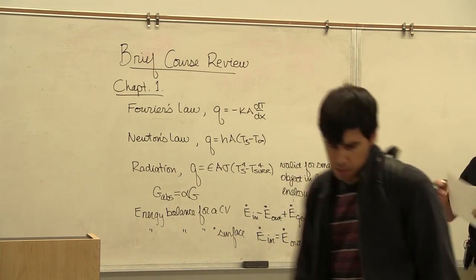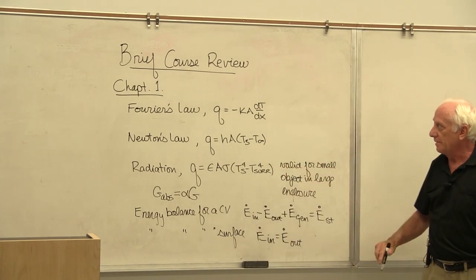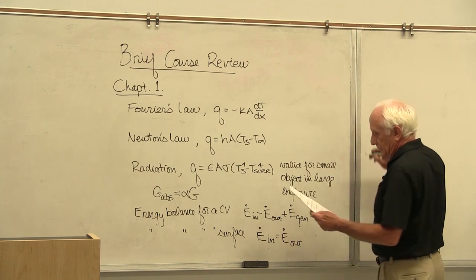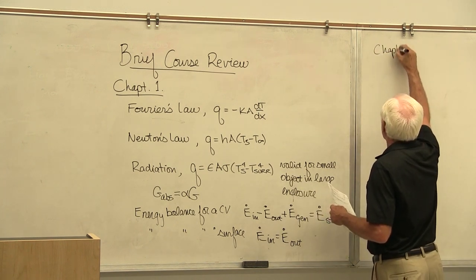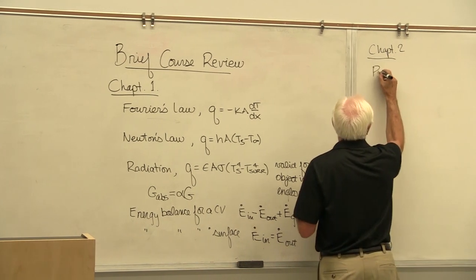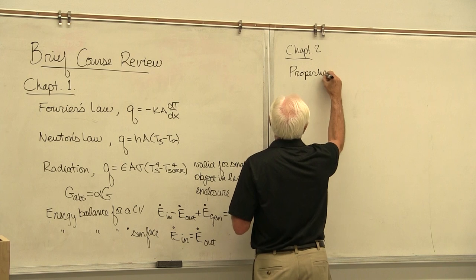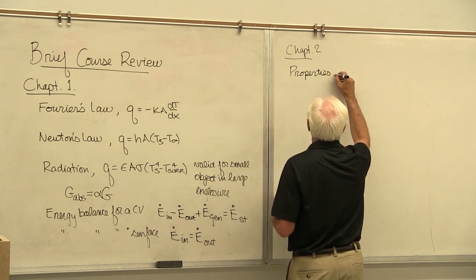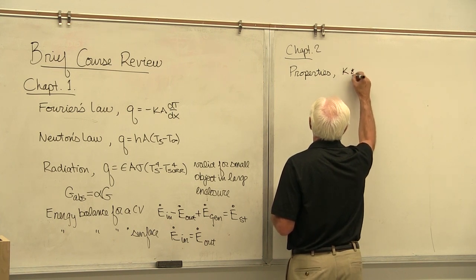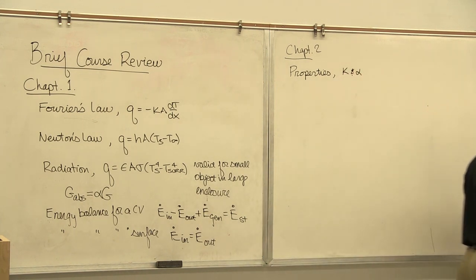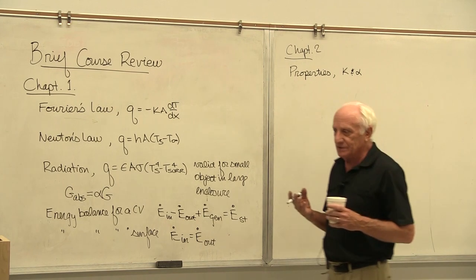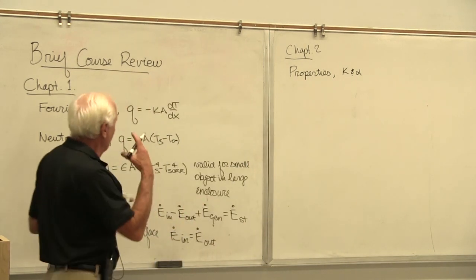Okay, so that's the last of Chapter 1. Then we worked problems which involved all these equations: Fourier's law and Newton's law and radiation. Chapter 2, we start off talking about properties, especially K and alpha. Thermal diffusivity alpha, thermal conductivity K. There were a lot of other properties, but they weren't the most important ones. In the heat transfer book, the most important are K and alpha. There's other properties that are important, for instance mu and nu, viscosity—but that's fluid mechanics. Then we have C sub P; that's thermal. So there's other properties, but we focused on these two.